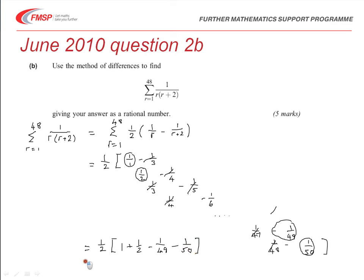And if you happen to have a calculator handy to work that out as a fraction, because it does ask you for a rational number here, you will end up with 894 over 1,225.